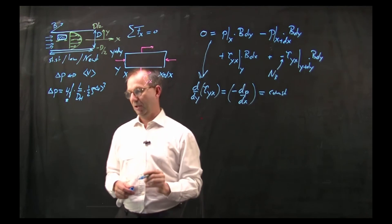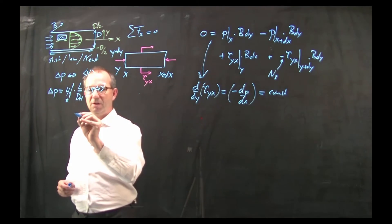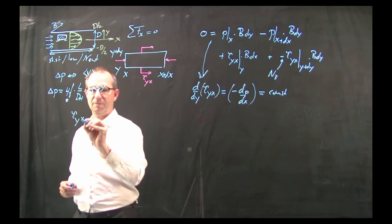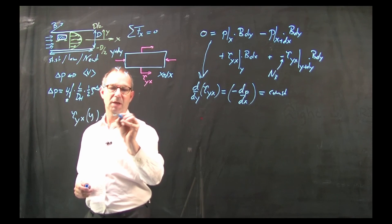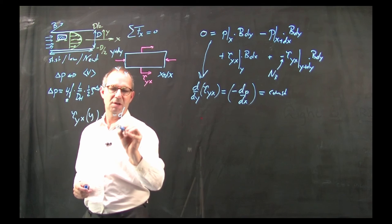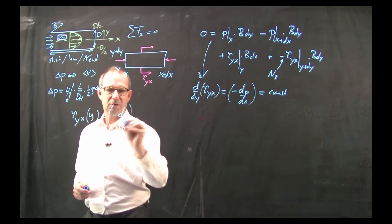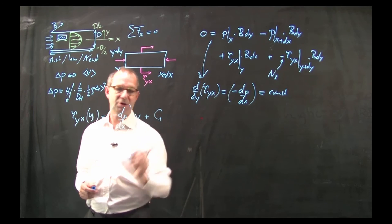I can integrate this equation and thus find tau yx which is a function of y equals minus dp/dx times the y coordinate plus an integration constant.